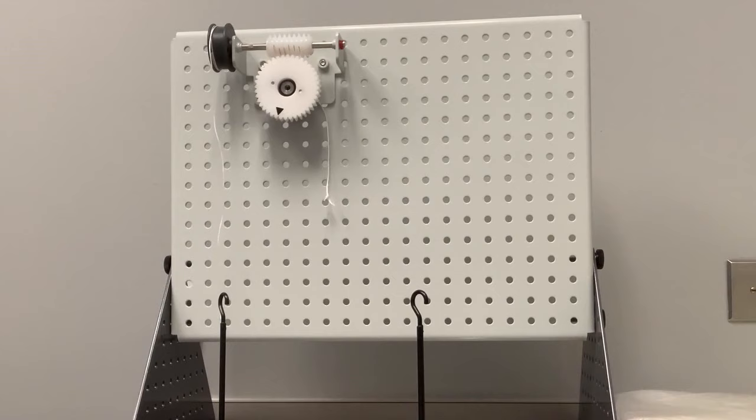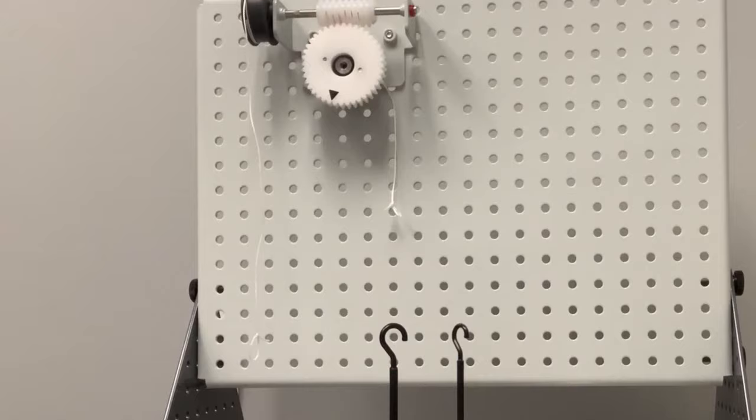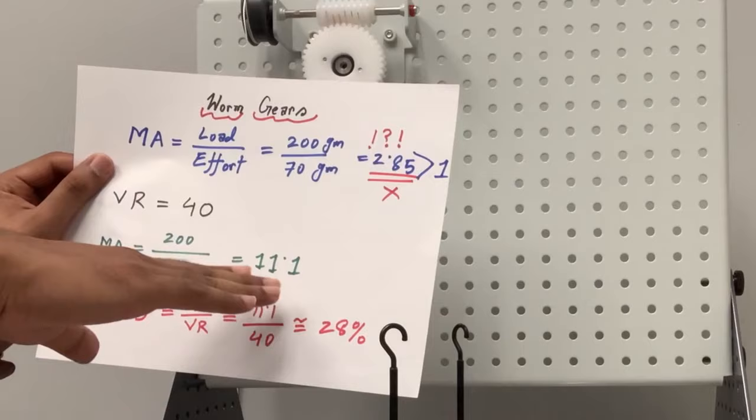So maybe even without the load I needed 52 grams to move that load side. So if we can remove that 52 grams from that 70 grams that we required to raise this 200 gram load, then our calculation would be different.